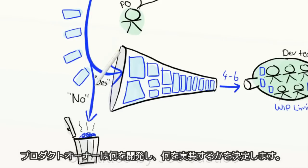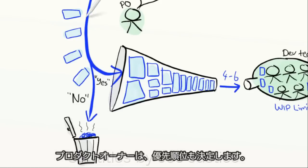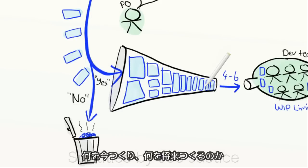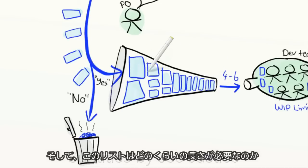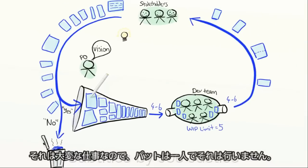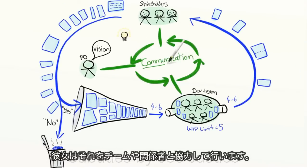The product owner decides what goes in and what goes out. The product owner also decides the sequencing. What do we build now? What do we build later? And how long does this list actually need to be? That is a hard job, so Pat doesn't do it alone. She does it in collaboration with the team and the stakeholders.